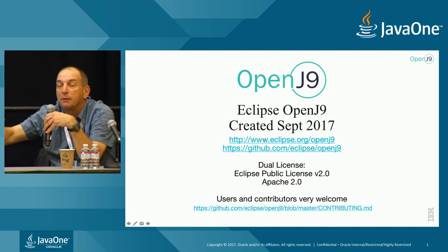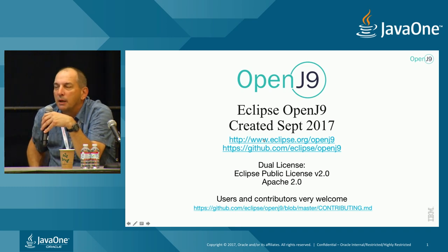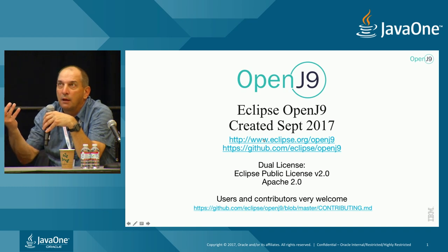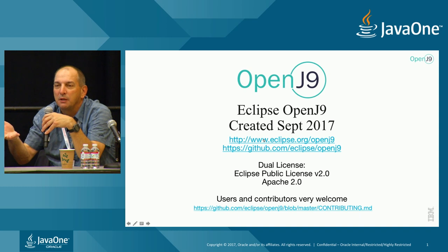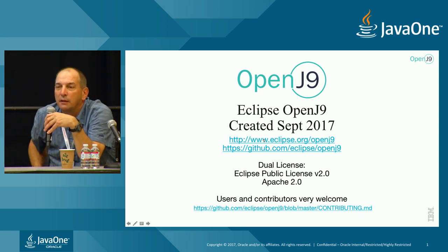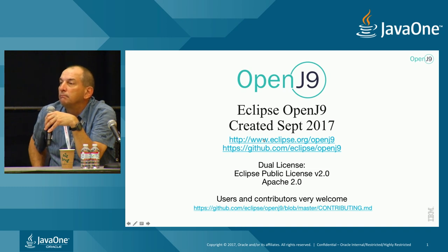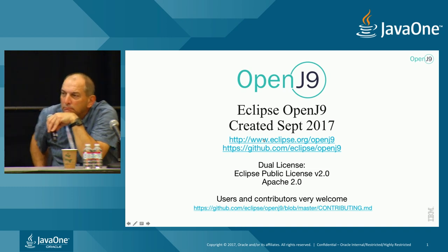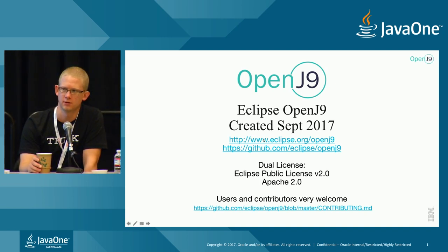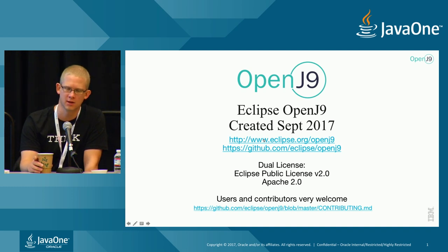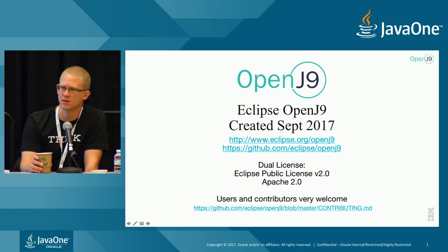We battle test it for four to five years and then it becomes a default. We just switch which of the five GC policies is default to the one giving the best performance across the board. There's a command line option — -Xgcpolicy — where you can specify which garbage collector policy you'd like: Balanced for large heaps, GenCon for most things, or Metronome for small deterministic pauses.